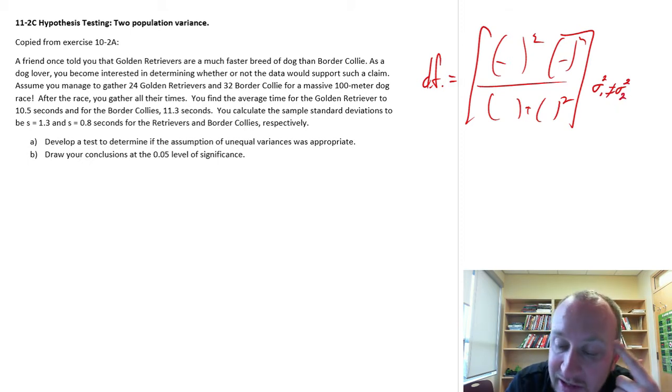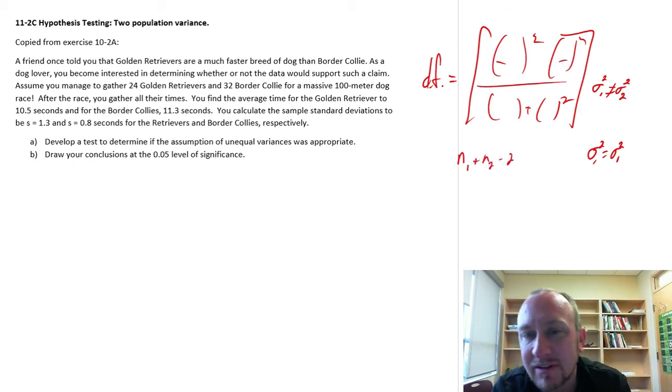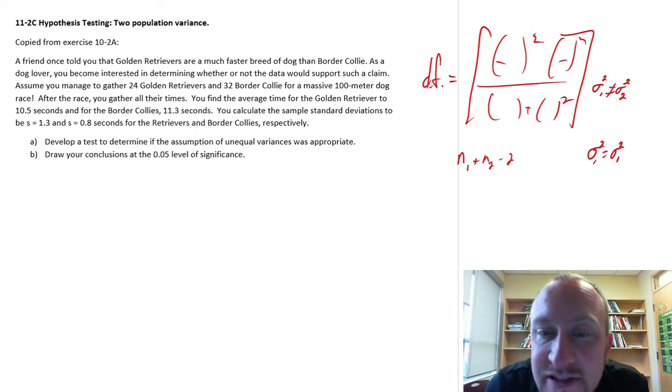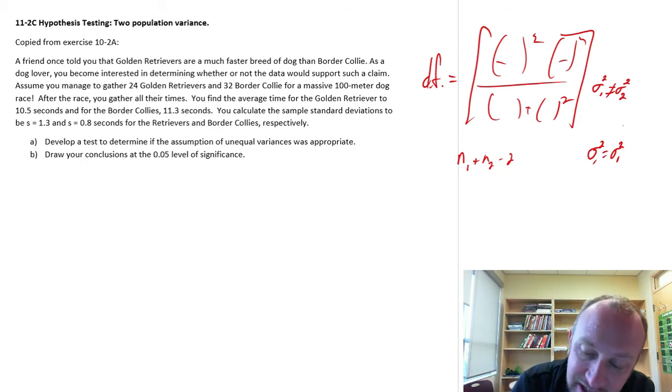If they were equal to each other, then we wouldn't have to use that big, gross formula. And we just calculated it N1 plus N2 minus 2. And that was clearly a much easier way to determine the degrees of freedom. So what we're going to do here in Module 11 is we'll actually test to see, was this necessary?